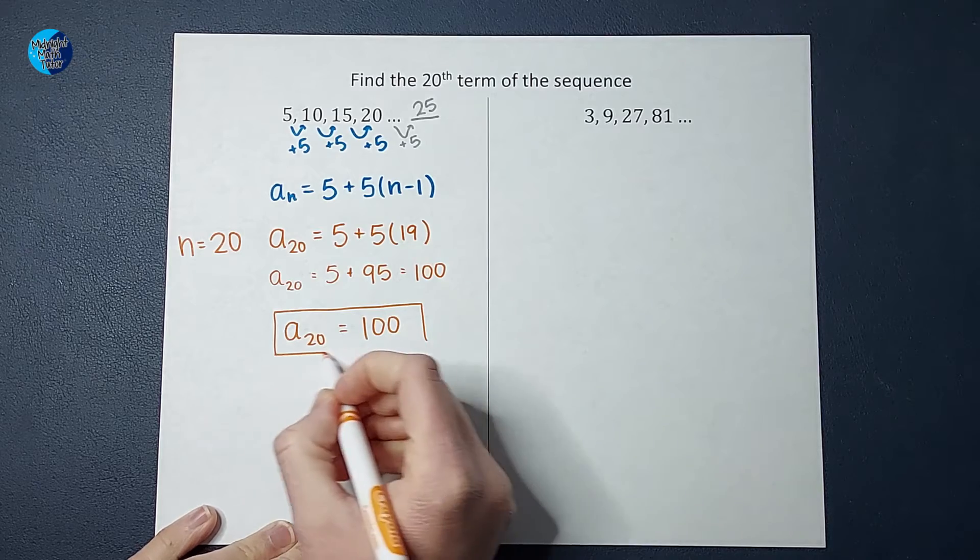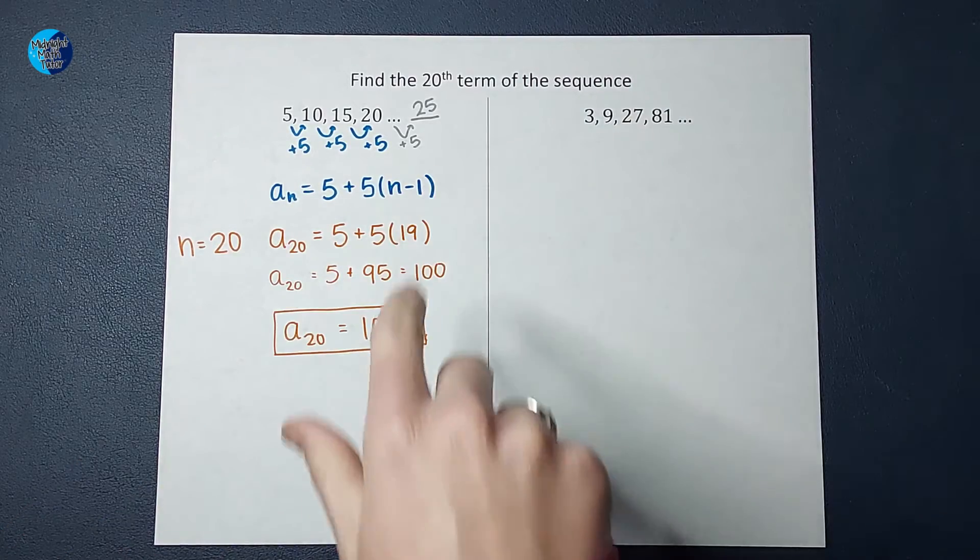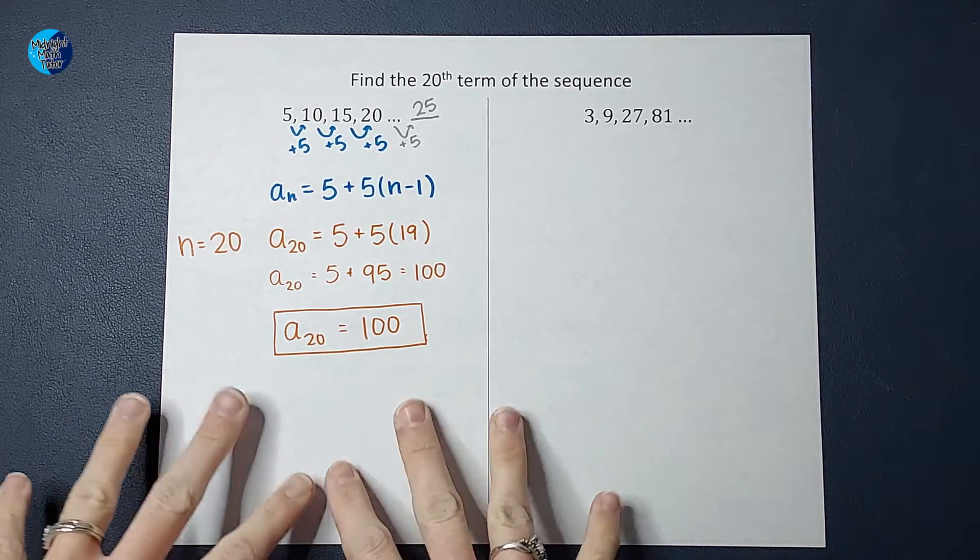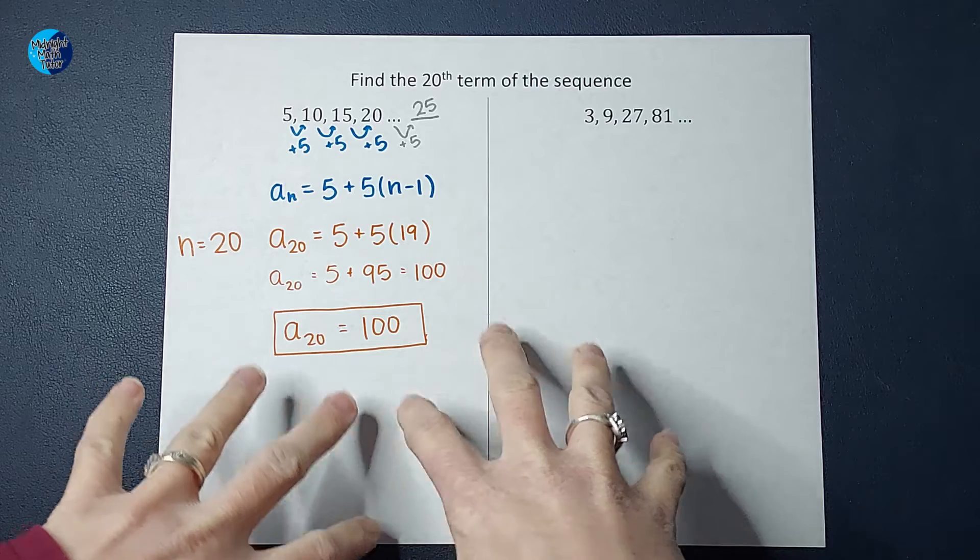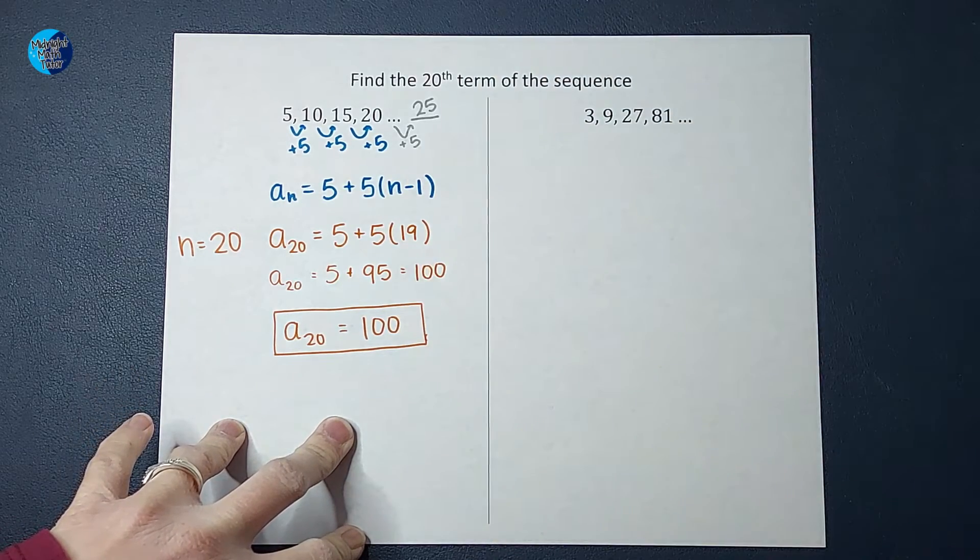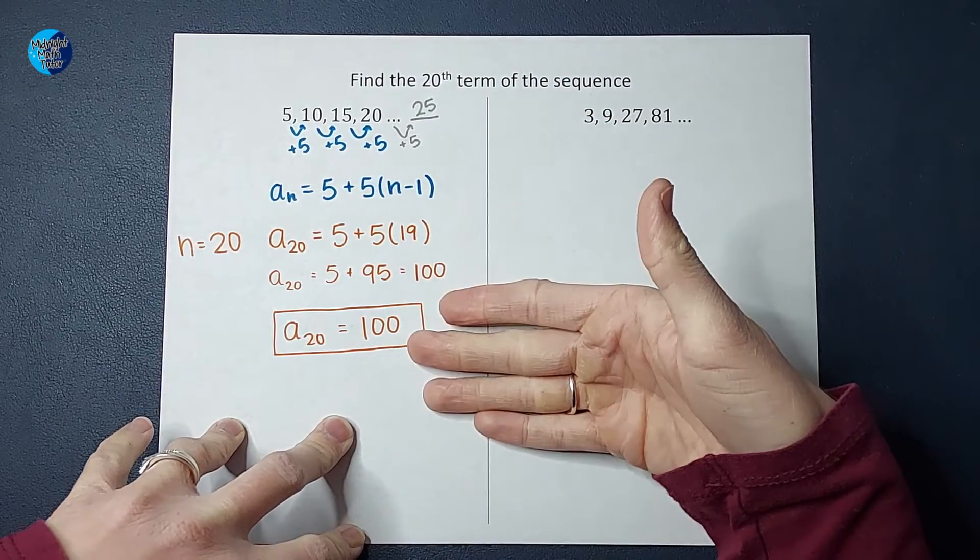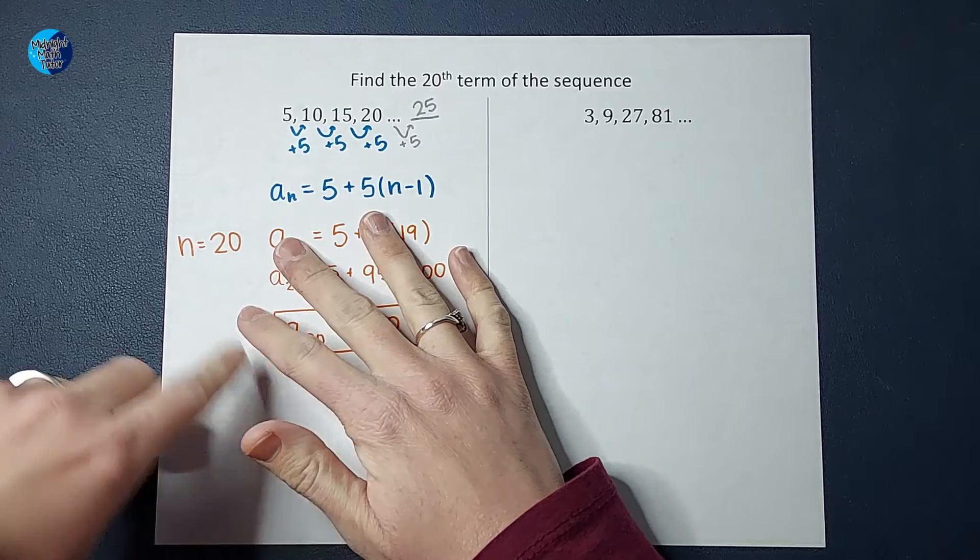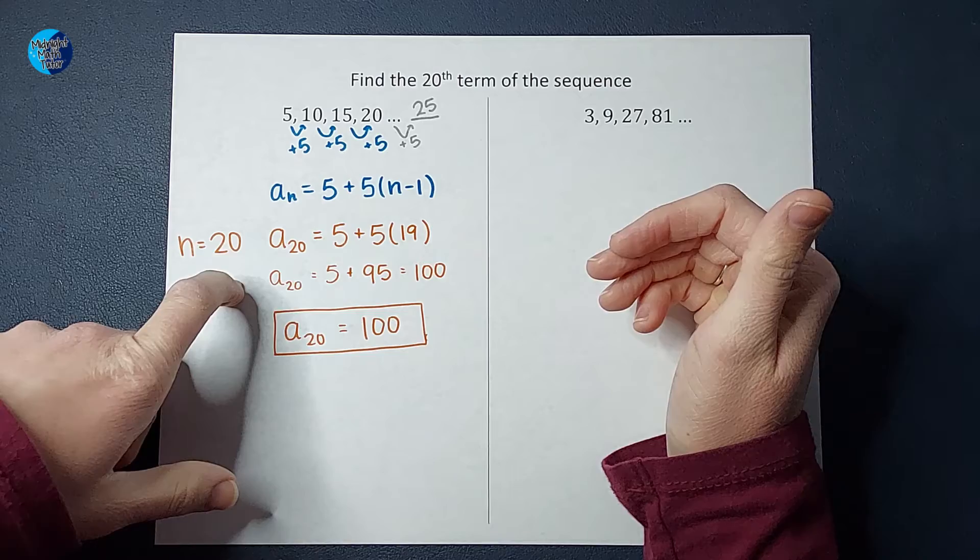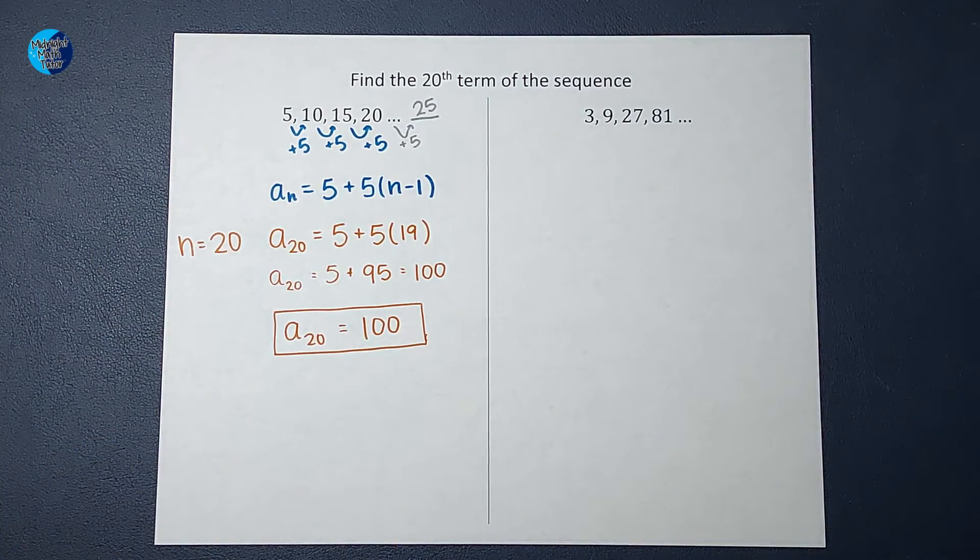Isn't that cool? All right. Now, if you were like, okay, lady, I could have just added 5 nineteen times and that would have been faster, right? Okay. Maybe it would have been in this case, but as you do it more and more, you're going to get faster and be able to do it more quickly, or pretend they wanted to know the 500th term in the sequence. I don't want to add it 499 times. So it's helpful to know this formula, right?